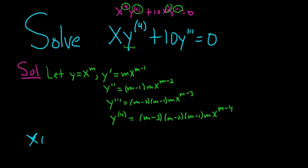So we have x times that huge fourth derivative. So that was m minus 3, m minus 2, m minus 1, m, and then x to the m minus 4, plus 10.